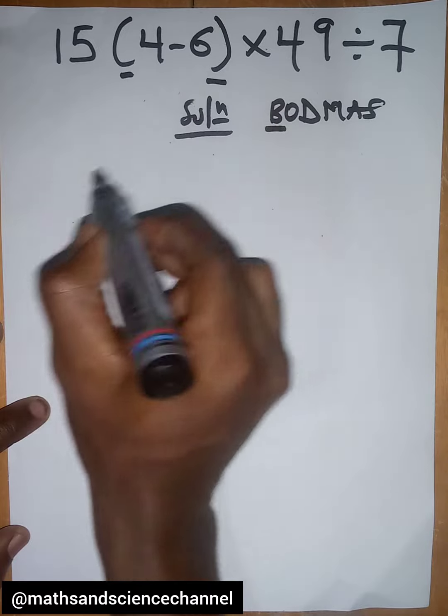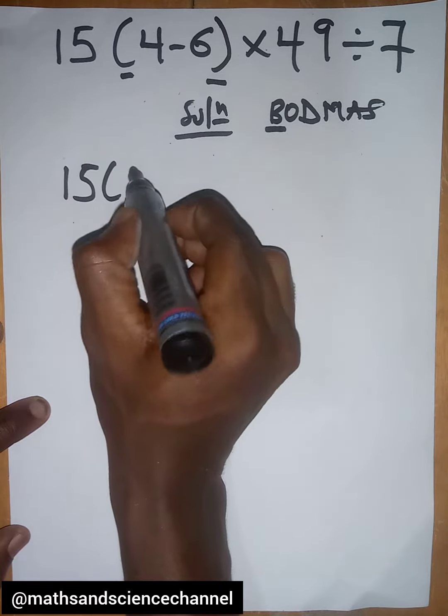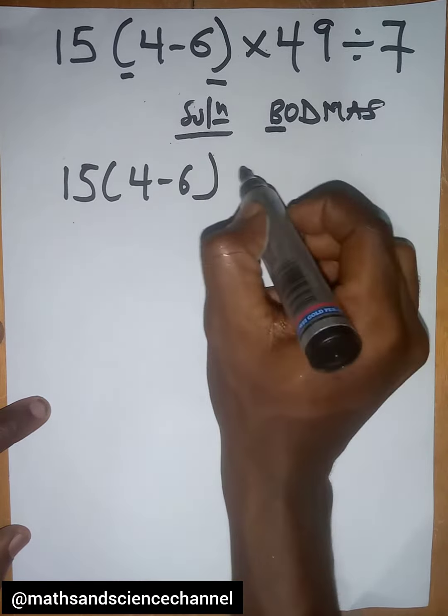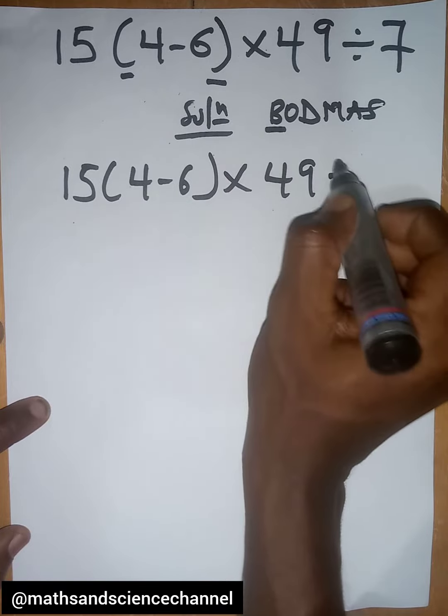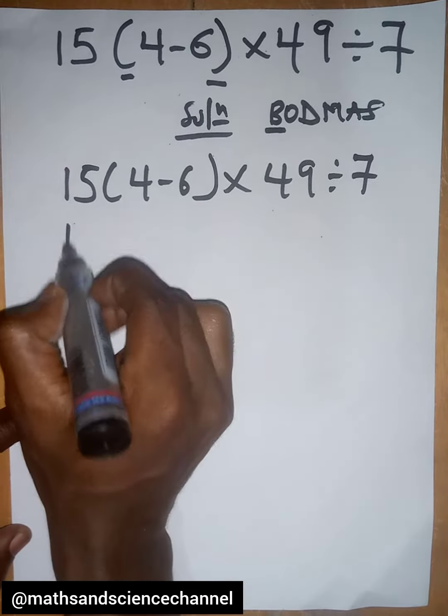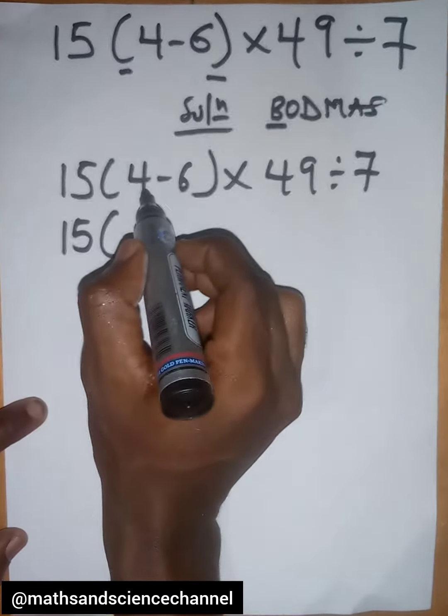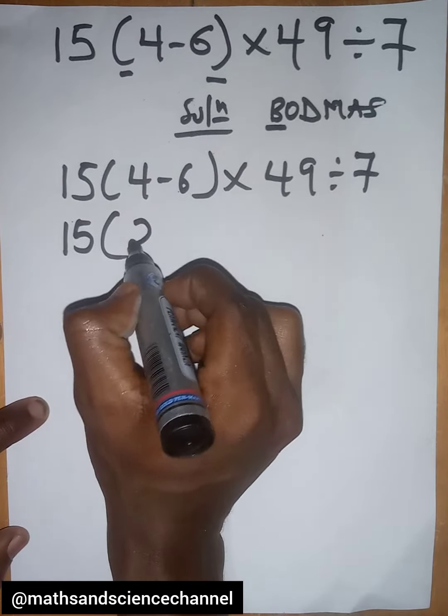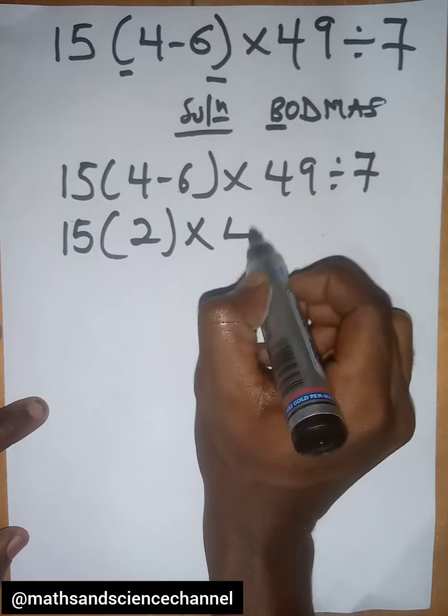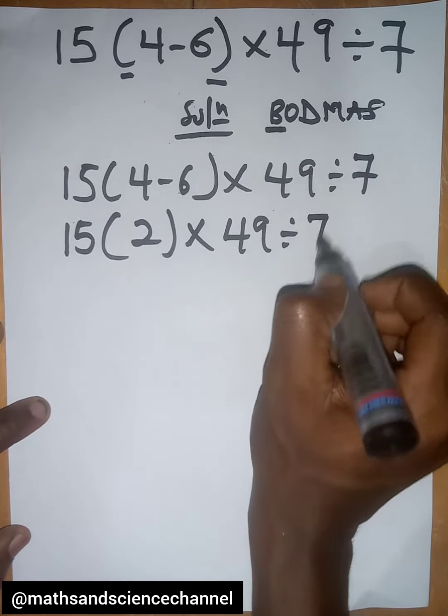Let me write the whole thing: 15(4-6)×49÷7. We look at what's in the bracket first. 4 minus 6 is -2, then multiplied by 49 divided by 7. So we have 15(-2)×49÷7.